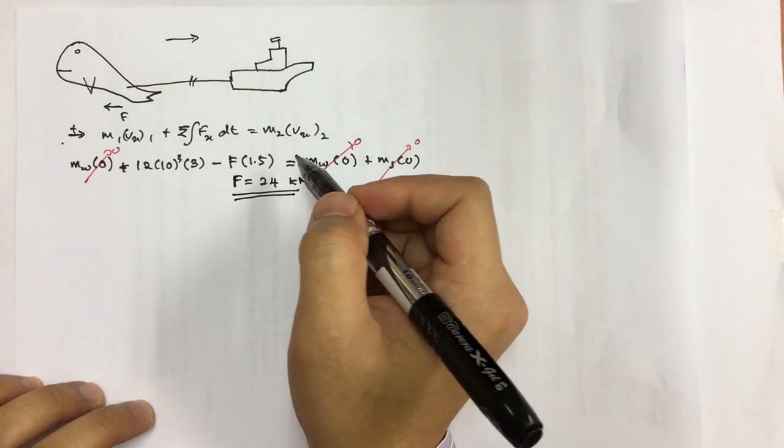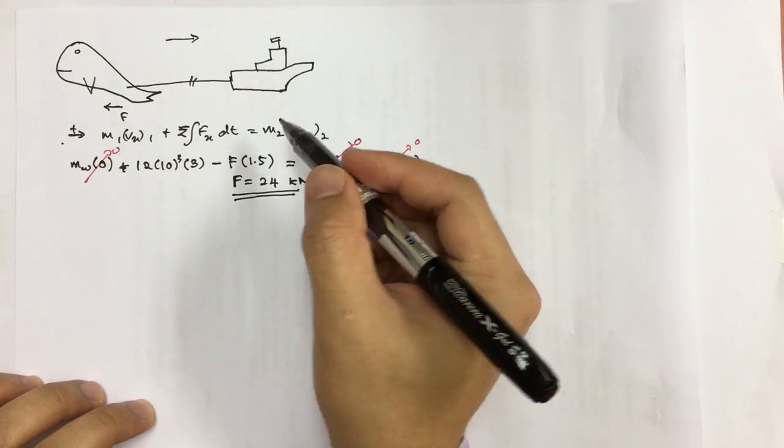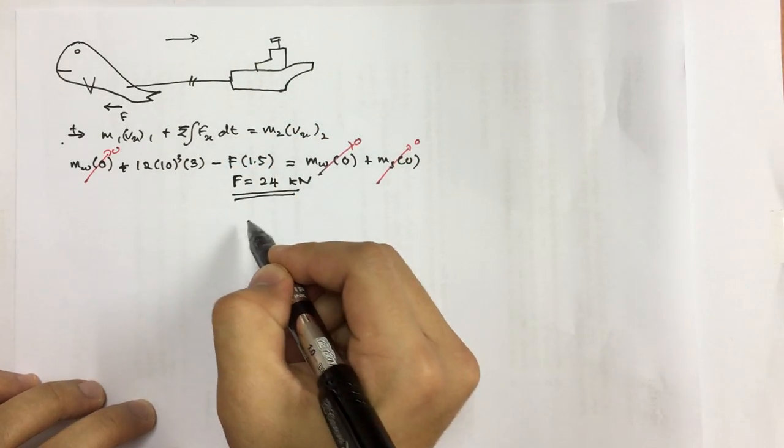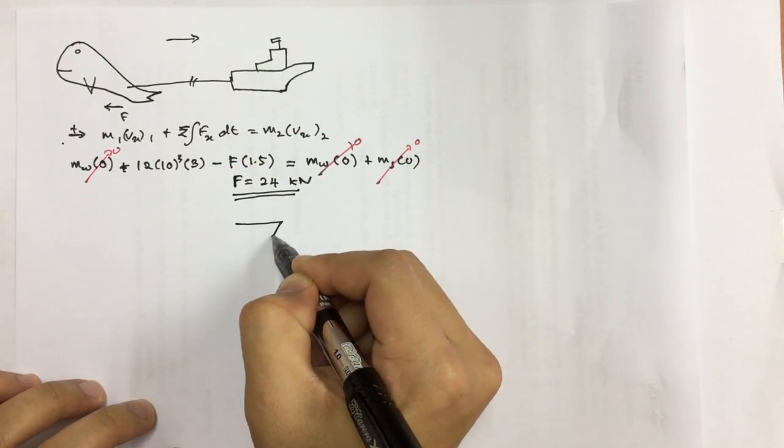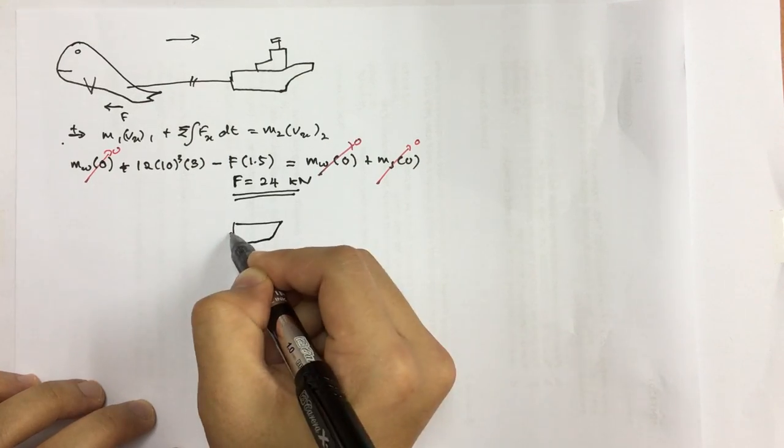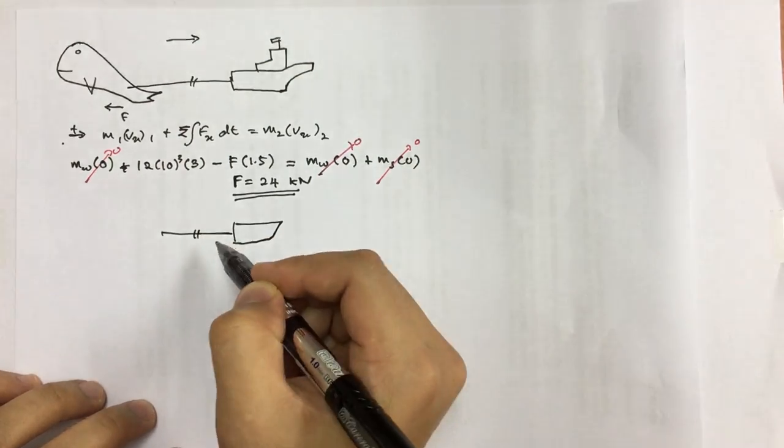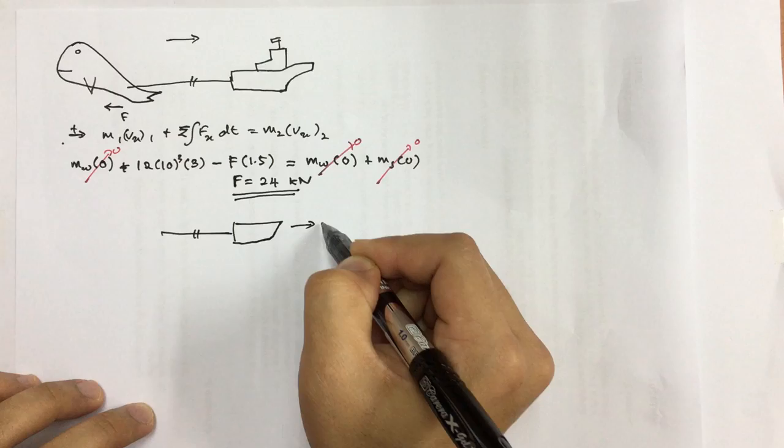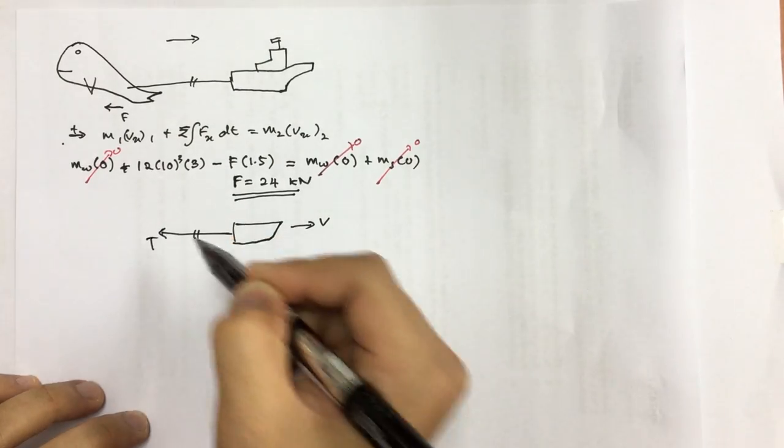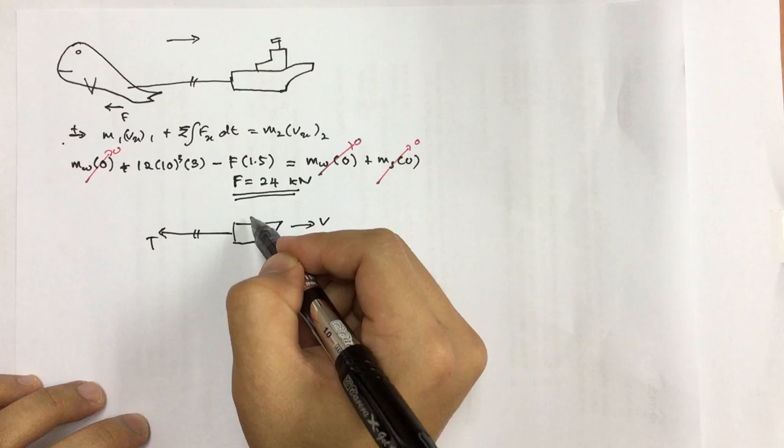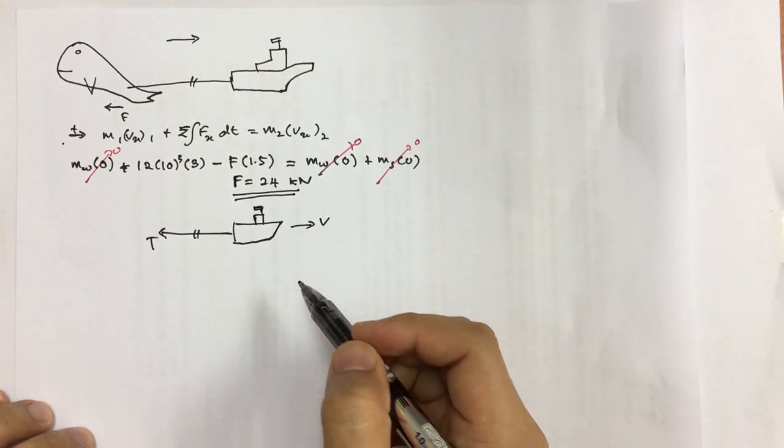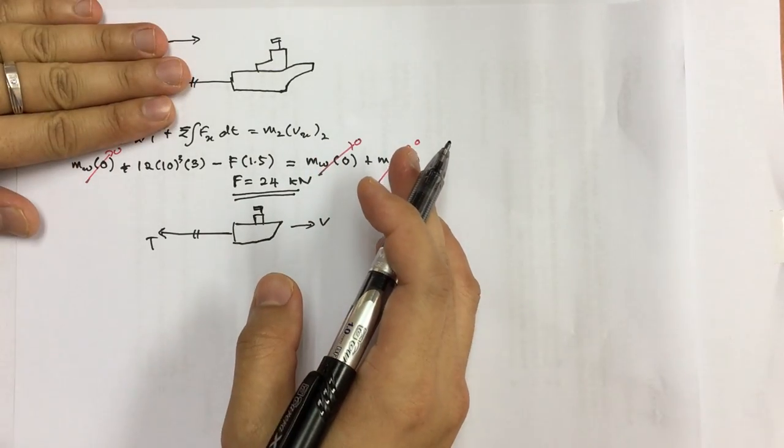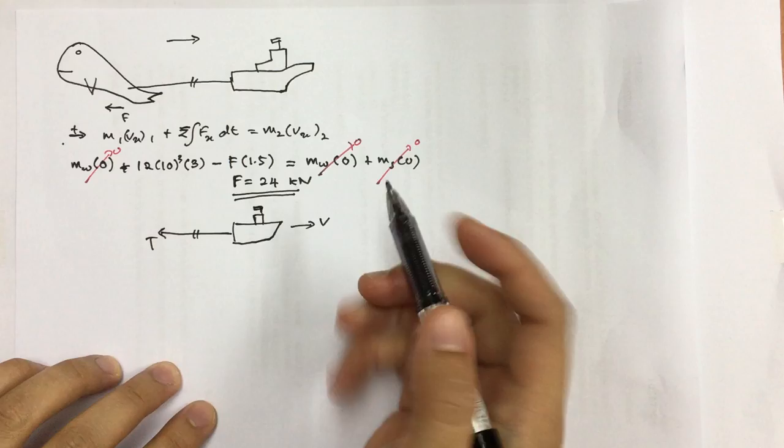The second question is, what is the average force on the rope during the tow? Here, we are going to consider only the ship and the cable. The velocity going to drive V and this is the tension force experienced by the rope. This is our ship. What we are going to do is, we are going to isolate the whale. We are not going to consider the whale.